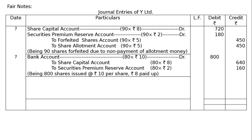Second entry — reissue: Out of 80 shares reissued, Bank Account debited 80×₹10 = ₹800. Share Capital Account credited 80×₹8 = ₹640. Securities Premium Reserve Account credited 80×₹2 = ₹160. Narration: Being 80 shares issued at ₹10 per share, ₹8 called up (paid off), with ₹2 as securities premium reserve.